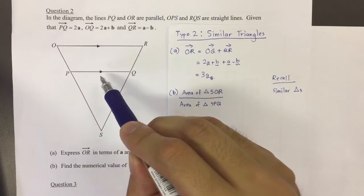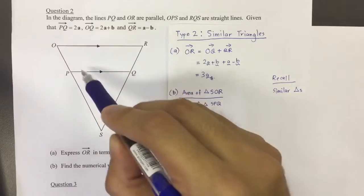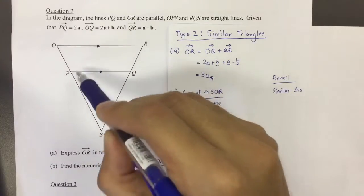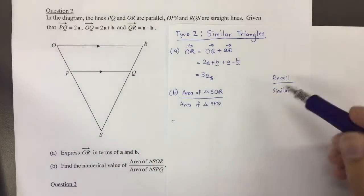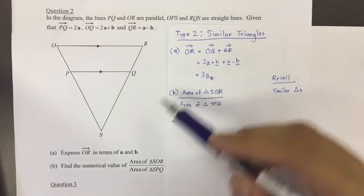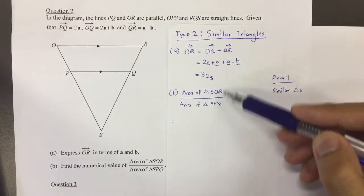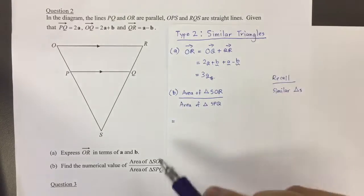And what happens is that when they are parallel, actually the angles are the same. This pair, and also this pair. So actually, by the AA test, these two triangles are similar. That's why we are looking at a similar triangles type of question.